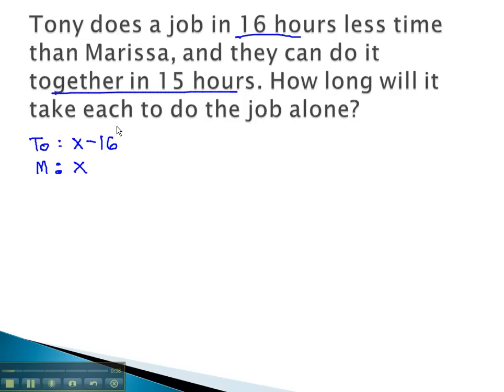We're also told, as a team, they can do the job in 15 hours. We can then set up an equation using the reciprocal of the individual times to equal the reciprocal of the team time. Tony's reciprocal is 1 over x minus 16, plus Marissa's reciprocal is 1 over x, equals the team 1 over 15.